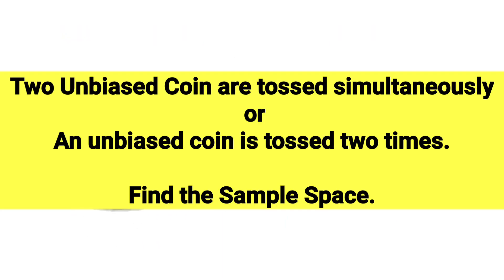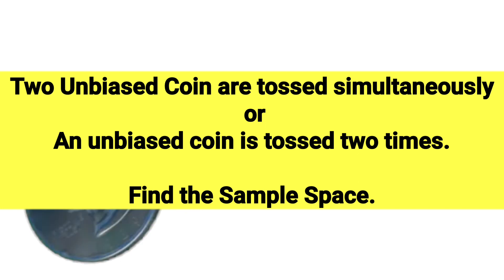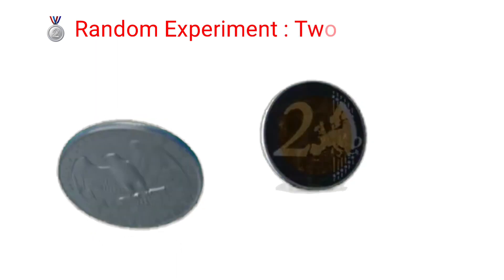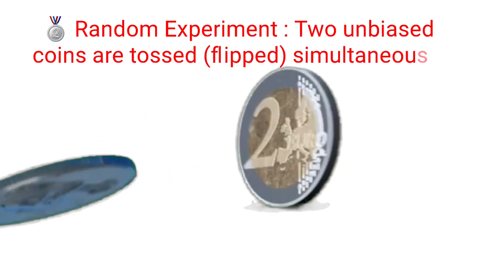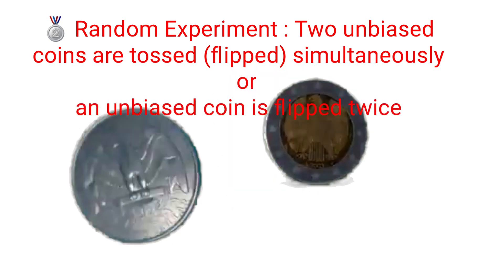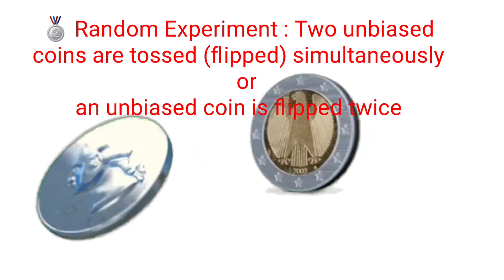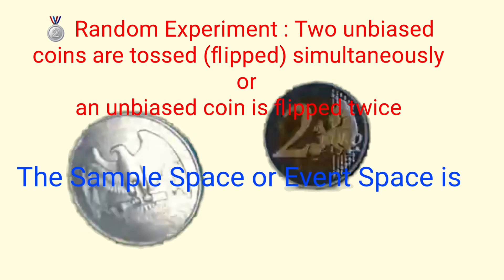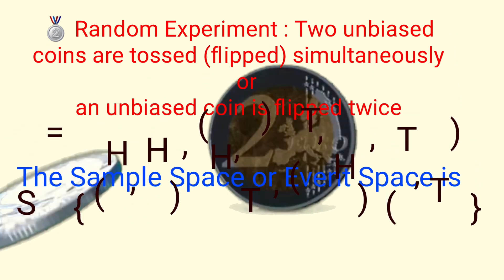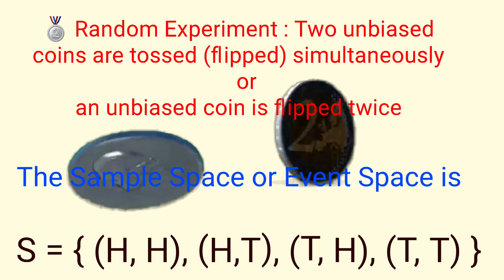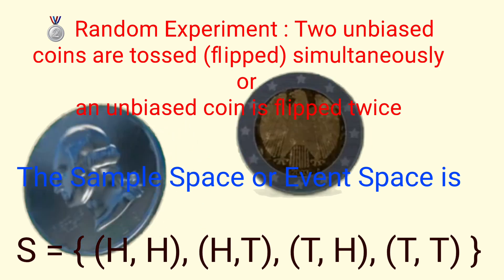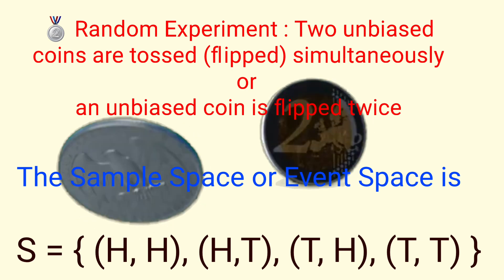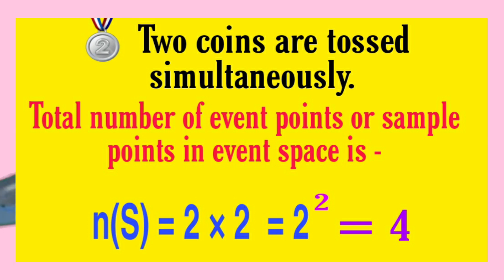Next example: two coins are tossed simultaneously, or equivalently a coin is tossed two times. Find the sample space. The coins are distinguishable — we can speak of the first coin and second coin. Since either coin can turn up head or tail, the possible outcomes are: HH, HT, TH, and TT. So the sample space contains these four outcomes, and the total number of points n(S) = 2 × 2 = 4, that is 2 squared.